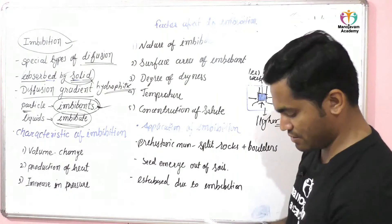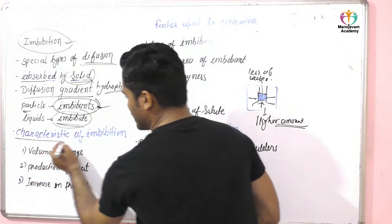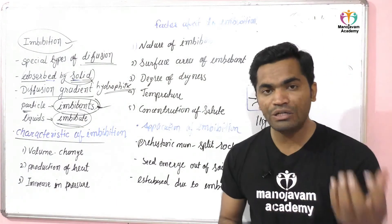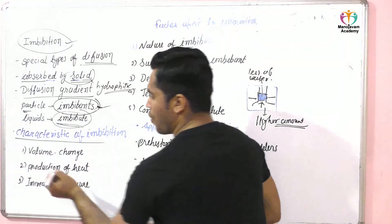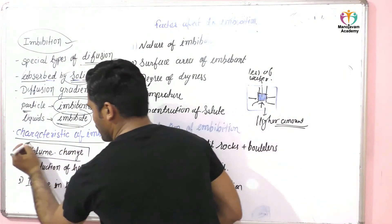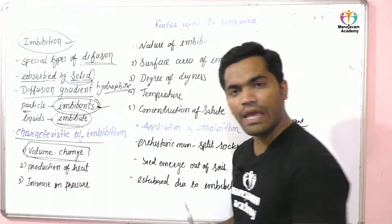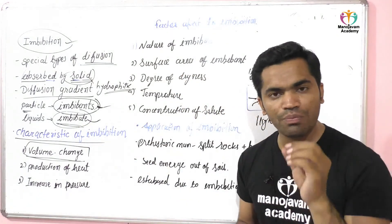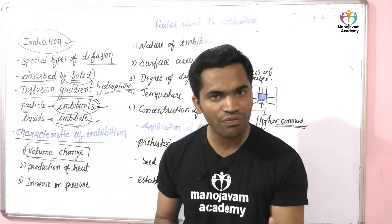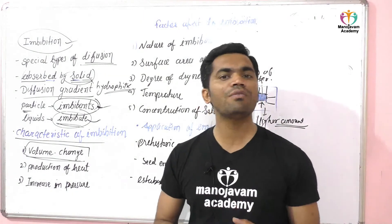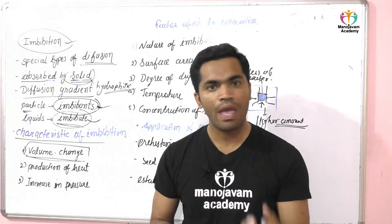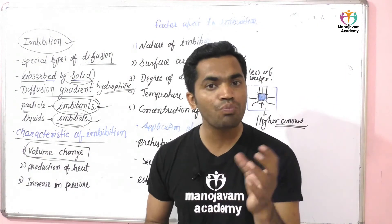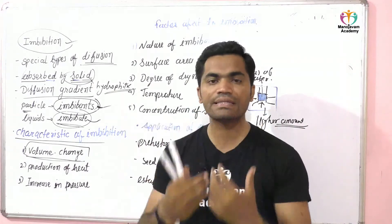Now, what are the characteristics of imbibition? The first characteristic is volume change. When we put hydrophilic particles into a liquid, water is absorbed by these particles, and at the same time the volume will increase.